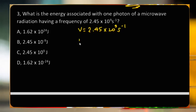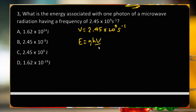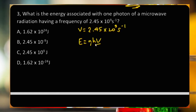Energy equals N times H times V, where N is a whole number. According to Planck, energy is a whole number multiple of a quantum of energy — a minimum unit of energy. This is Planck's quantum theory.